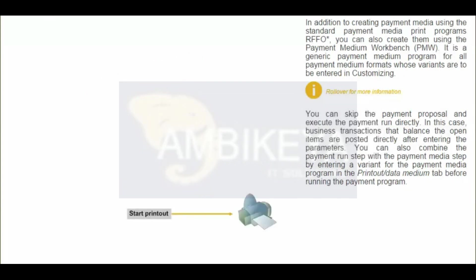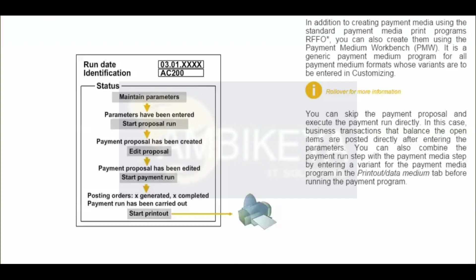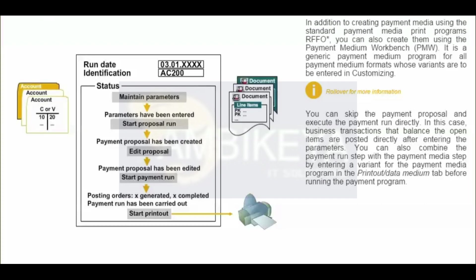Step 5 is print payment media. Payment media are generated in this step. One of the following occurs: payment media such as checks are printed; IDOCs are generated for the electronic data interface (EDI); or a data file is created as part of the data medium exchange. The system comes with standard payment media programs for many countries and many payment methods. In this figure, the payment program RFFOD-S is activated to print checks in Germany. In the USA, the program RFFOUS-C is used.